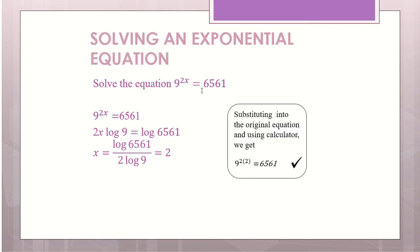So 9 to the power of 2x equals to 6561. We're going to solve for x — you need to apply log. So if you apply log to the left and you apply log to the right, the 2x will come in front here. Then you can solve it for x.